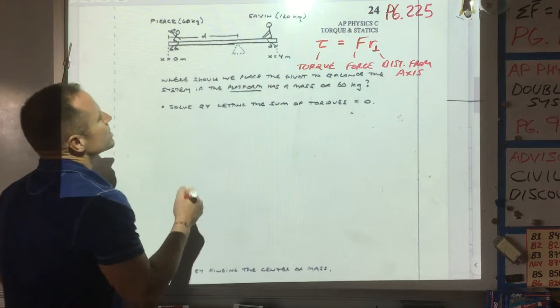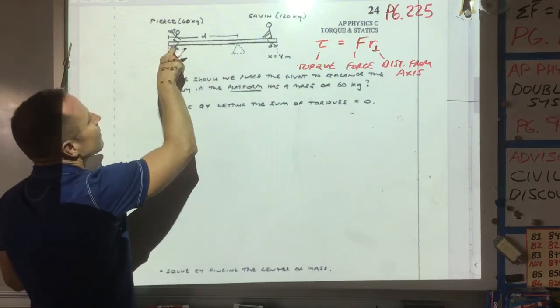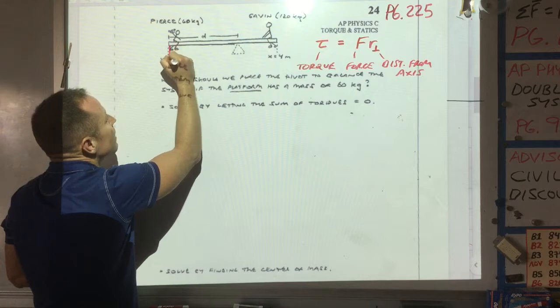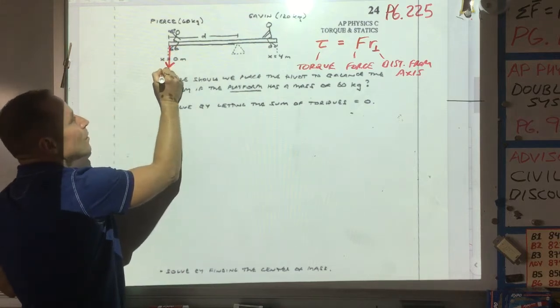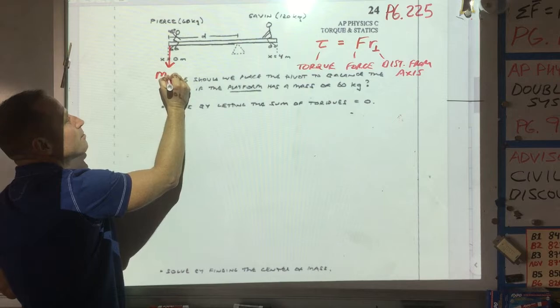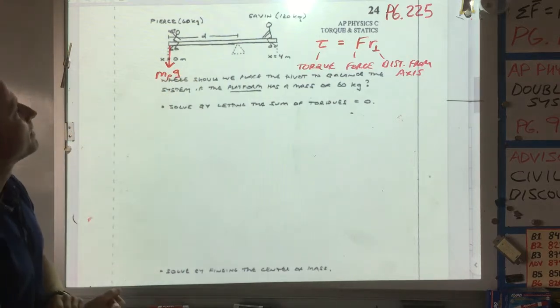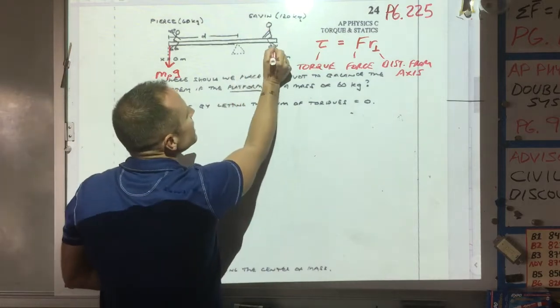So to see what we're talking about here, so here I am sitting on this side. Pushing down on this side of the plank will be my weight. So we're going to label my force as mass of Pierce times G, M_P G for Pierce.